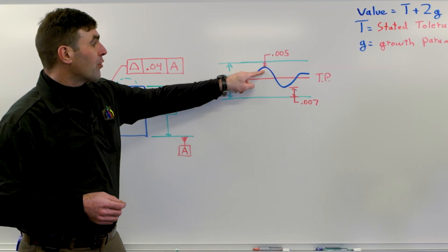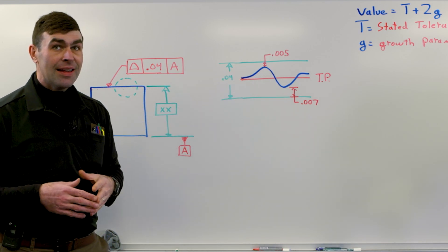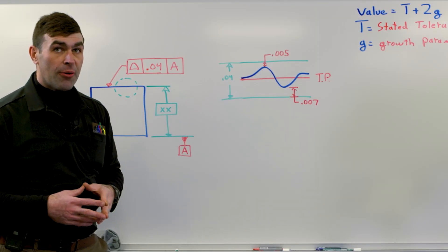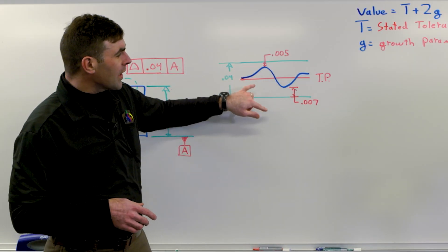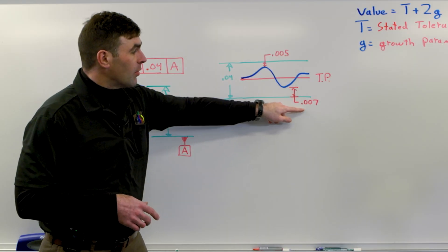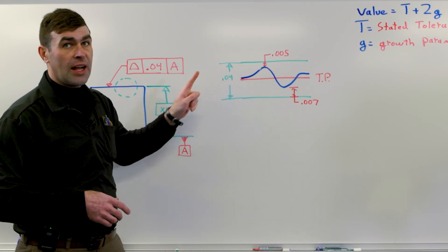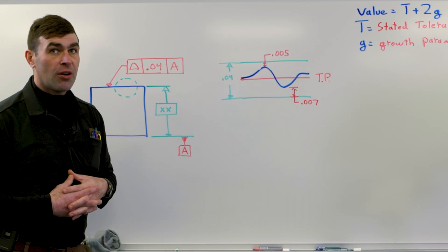Now, this is a measure of how far the surface is away from the tolerance zone boundary, not how far it is away necessarily from the true profile. And I'll get to that. That's a more practical way to do it. But we're going to take the smaller of the two numbers here. So here we're seven thousandths away. Here we're five thousandths. This is closer to the tolerance zone boundary, so that's what we're going to take into account to calculate our profile.